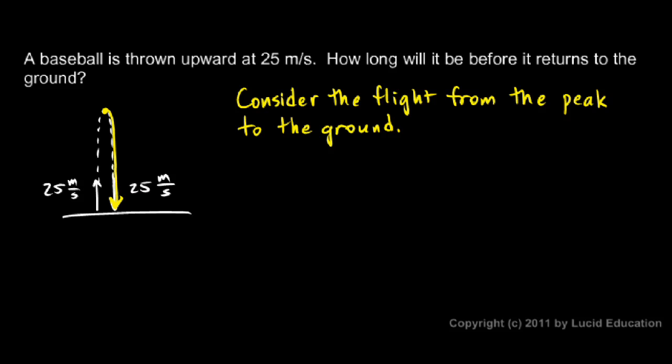When I do that, I know something. Right here at the top, the velocity is 0. So if I'm thinking of the flight only from the peak to the ground, right here at the top is my initial point, and down here at the bottom is my final point.